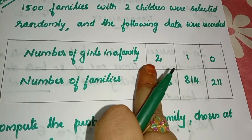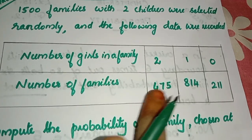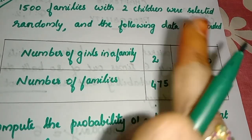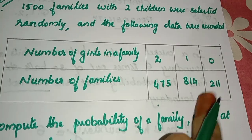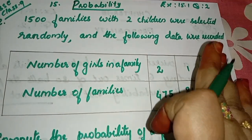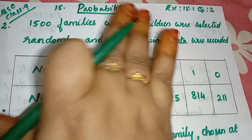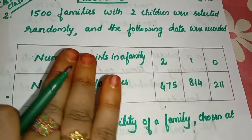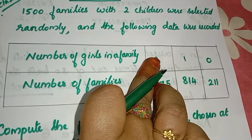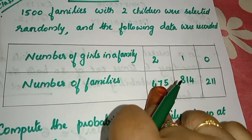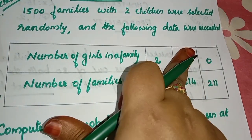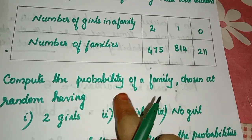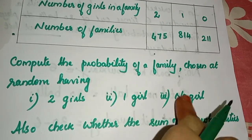The number of families: families having two girls are 475, families having one girl are 814, families having no girl are 211. Compute the probability of a family chosen at random having two girls, one girl, no girl.